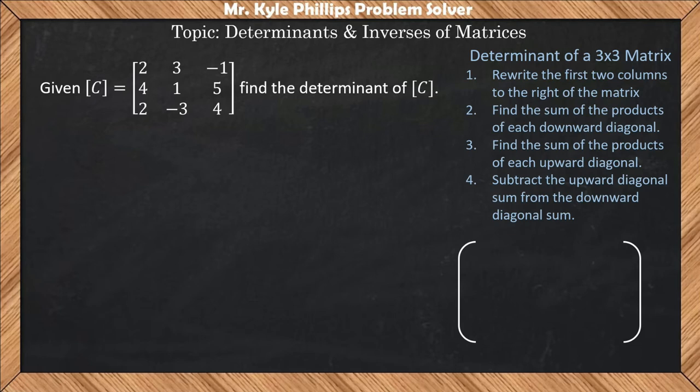So here, let's have our 3 by 3. Let's say this is 2, 4, 2, let's bring this down, 3, 1, negative 3, negative 1, 5, and 4.